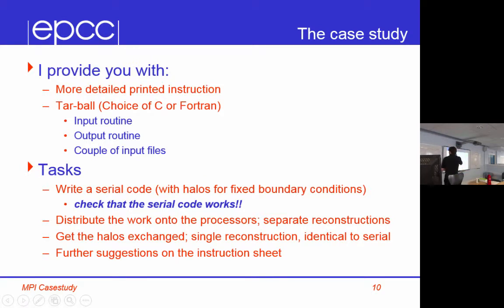So, my advice is to write a serial code first with halos for fixed boundary conditions. Again, just like the pie example, write the serial code first. It's not trivial, but it's not particularly hard. But write the serial code first, and there you will have fixed boundary conditions. Your boundaries will just be all white.